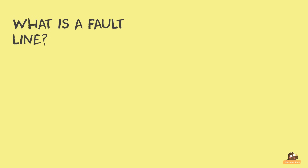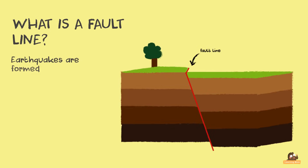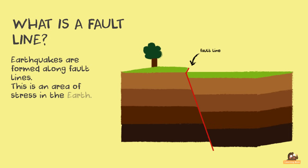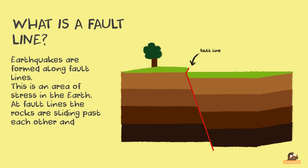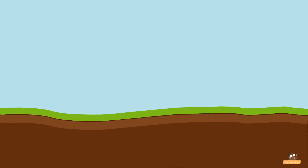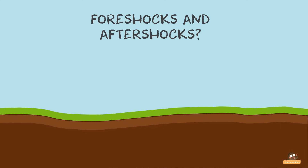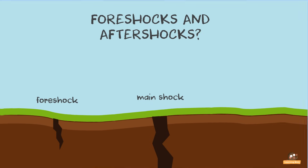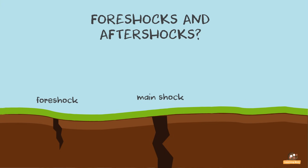What is a fault line? Earthquakes are formed along fault lines. This is an area of stress in the earth. At fault lines, the rocks are sliding past each other and will eventually cause a crack in the earth's surface. Before and after a large earthquake there will be smaller earthquakes. The ones that happen before are called foreshocks, and the ones that happen after are called aftershocks.